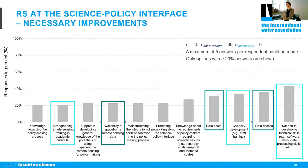The second theme was data supply: access to data, data costs, and the availability of space for remote sensing data.